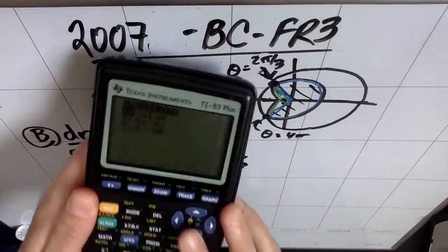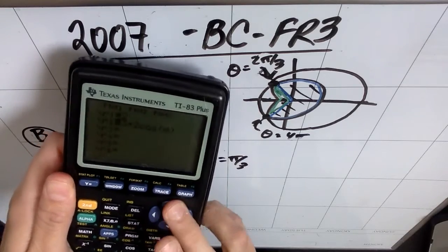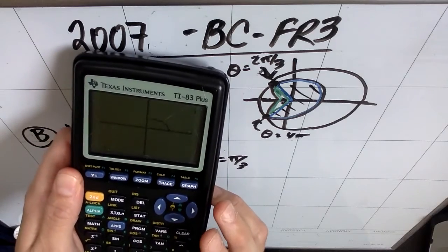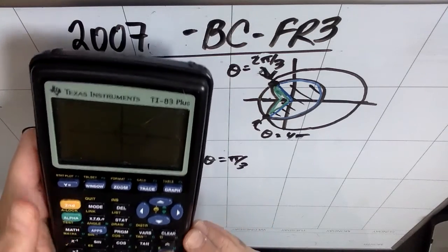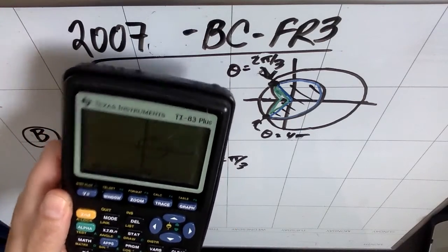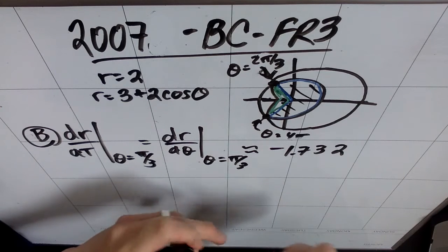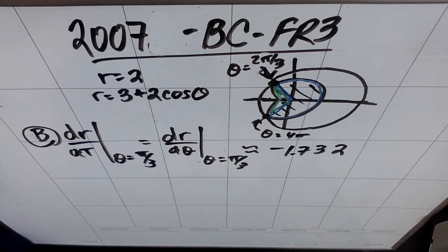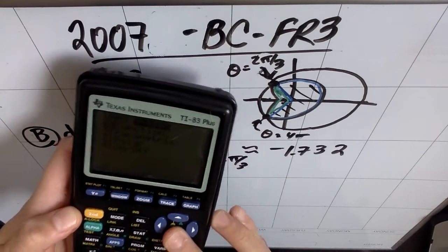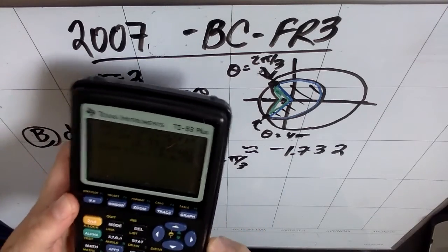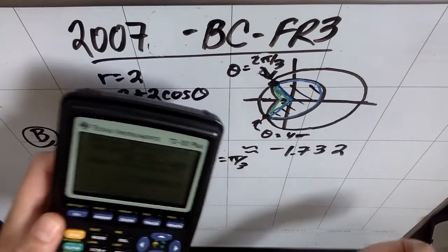One of the things my calculator can do is compute dr/dθ using second calc. I only want it for r2, so I turn off r1 by highlighting the equals and hitting enter. I hit graph to show the more complicated curve, then go to second calc and pick dr/dθ. I type in pi over 3 and it finds dr/dθ at that value. The other way is to quit and use math 8 (nDeriv) to derive r2 with respect to theta at pi over 3. Either way, I get negative 0.1732.